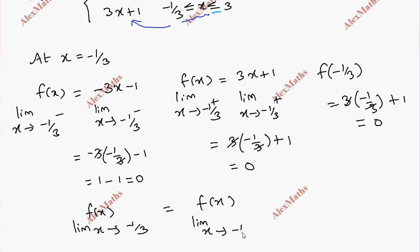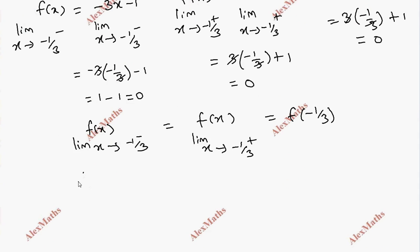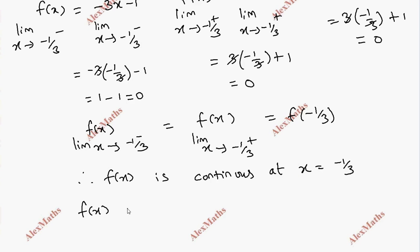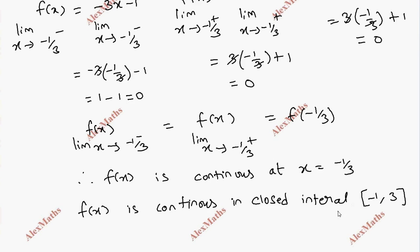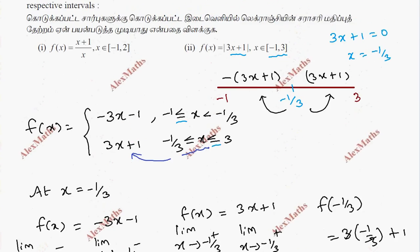Since the left-hand limit equals the right-hand limit equals f of minus 1 by 3, all equal to 0, the function f of x is continuous at x equal to minus 1 by 3. Therefore f of x is continuous in the closed interval minus 1 to 3. The first part — continuity — is complete.